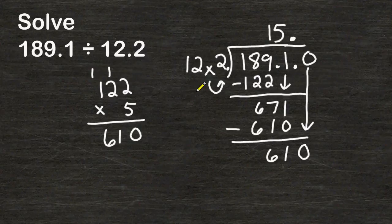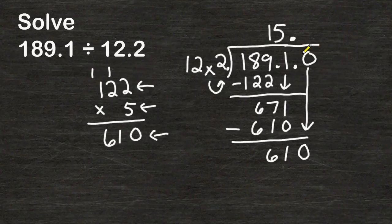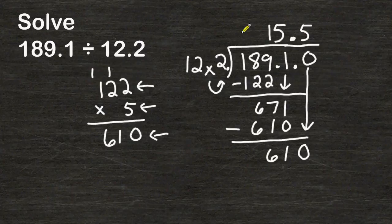Now we must divide 122 into 610. And as you can see from our multiplication over here we see that five groups of 122 makes exactly 610. So in this place value right here which is the tenths place we may write the number five. Because five groups of 122 once again is 610.